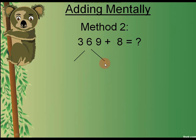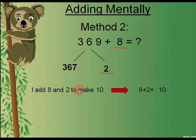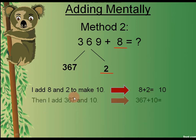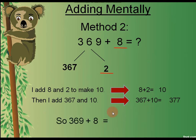I have taken 2 out of 369. When we take away 2 from 369, the remaining number is 367. As I told you, we are going to add by making 10, so I add 8 and 2 to make 10. After making 10, I add 367 and 10 to find the answer mentally. After adding 367 and 10, I get 377. So 369 plus 8 equals 377. This was the second possible method.